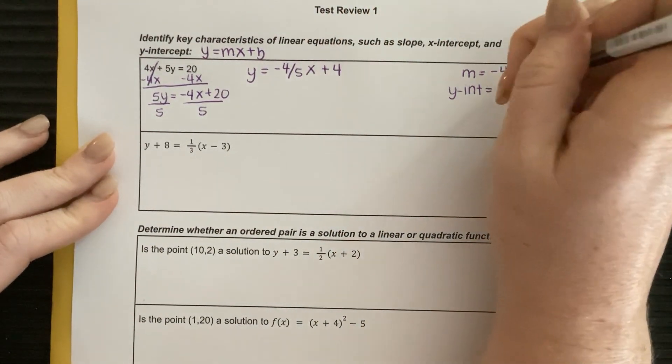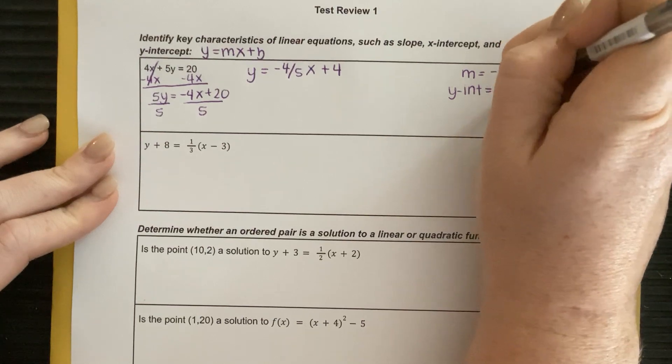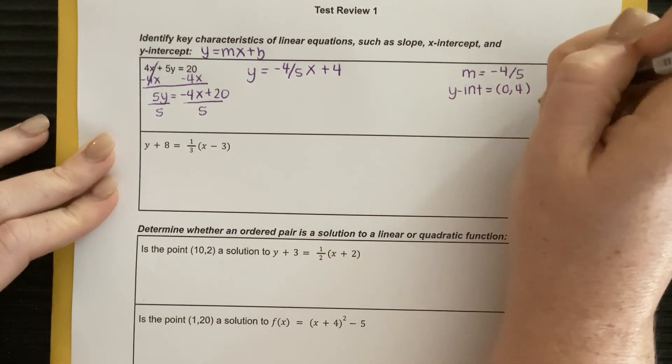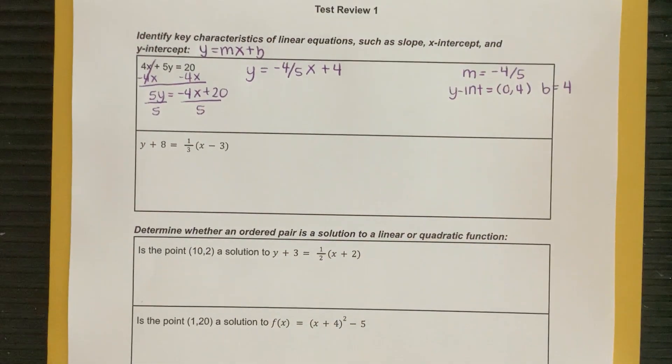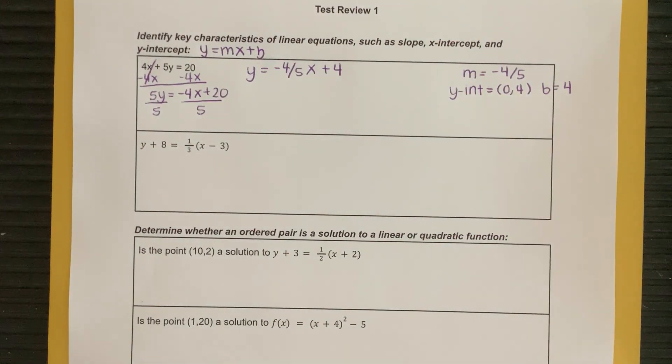Now, you need to be careful, because if it asks for the point, it's 0 comma 4. If it asks you what is the b value, the b value is just 4. So make sure you're really paying attention to what it's asking for, because those are two different things.